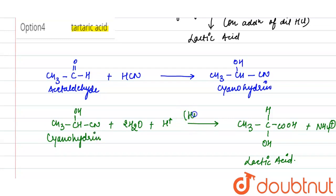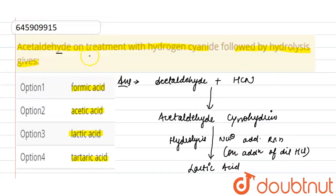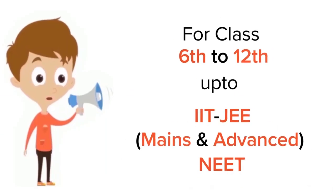In this reaction, hydrolysis occurs. Now the end product formed is lactic acid, so we can say that acetaldehyde on treatment with hydrogen cyanide followed by hydrolysis will give lactic acid. So Option 3 is correct. Thank you.